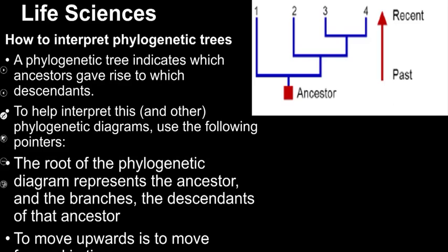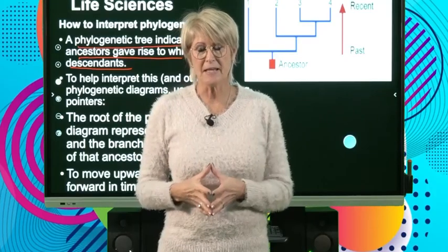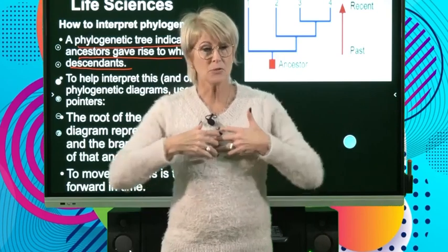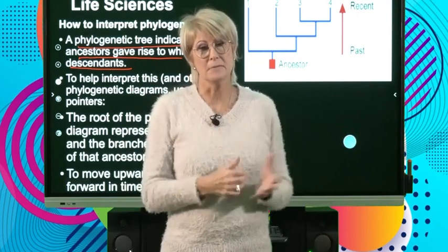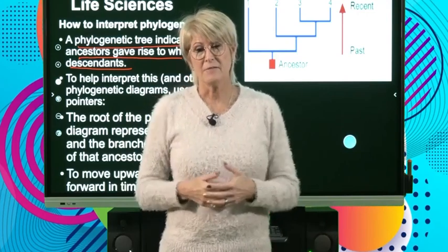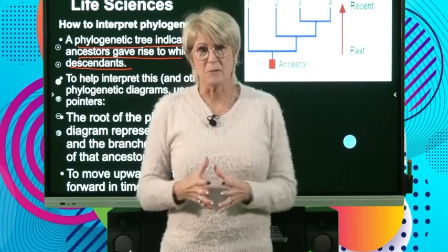A phylogenetic tree indicates which ancestors gave rise to which descendants. It's very much like a family tree, but in a phylogenetic tree we include all sorts of organisms and we can go back millions and millions of years — even billions of years — to see back to where life first began.